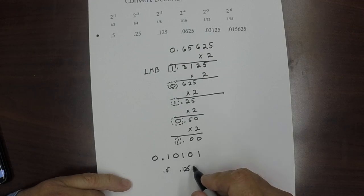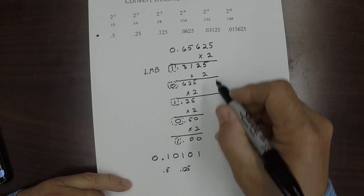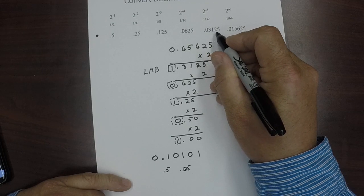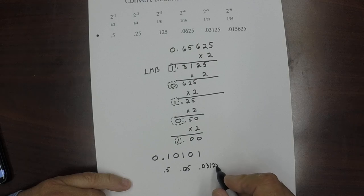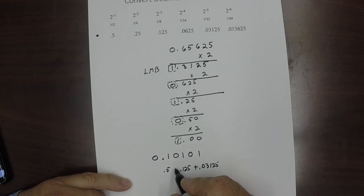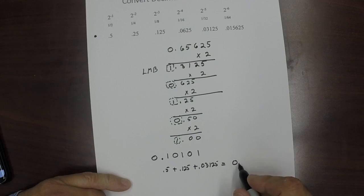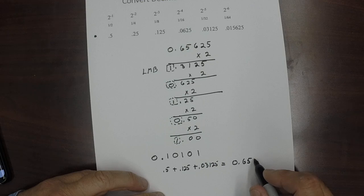This one's worth 0.0625. There's no 1 in it. And then finally this one is worth 0.03125. And we add all those together. And what do we come up with? You can check it yourself. We come up with 0.65625.